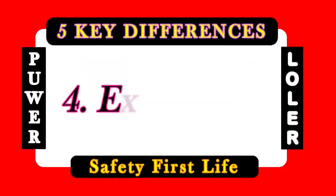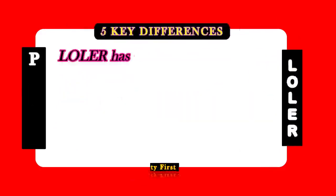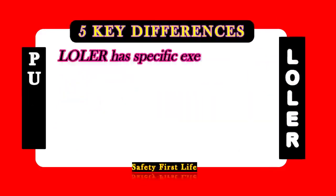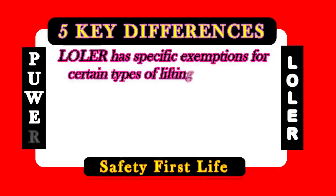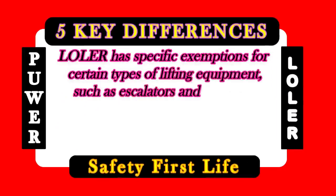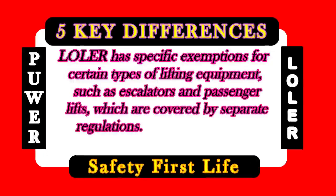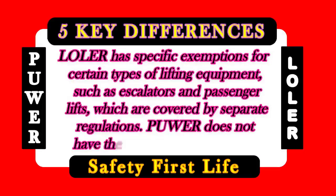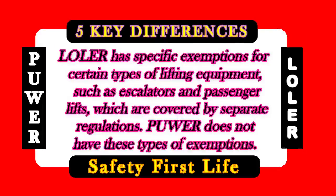Difference 4: Exemptions. LOLER has specific exemptions for certain types of lifting equipment, such as escalators and passenger lifts, which are covered by separate regulations. PUWER does not have these types of exemptions.